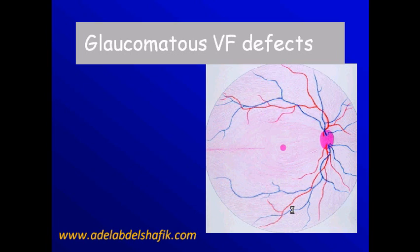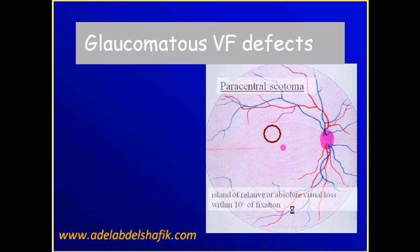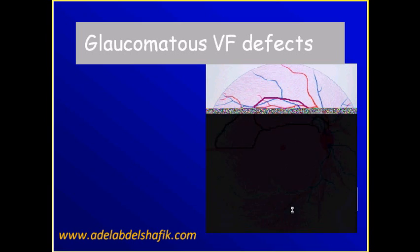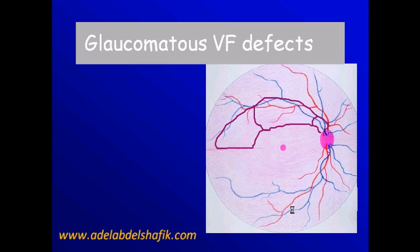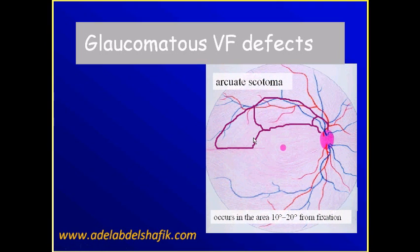In glaucoma, special changes go with the disease. These are paracentral scotoma — an island of affection in the central 10 degrees. Arcuate scotoma, or arcuate seidel — it extends up to the horizontal. When it reaches the horizontal, it's an arcuate. It occurs between 10 and 20 degrees from the point of fixation.